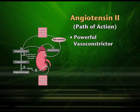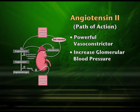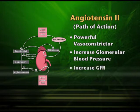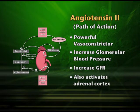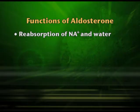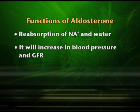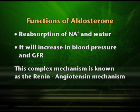Angiotensin 2 is a powerful vasoconstrictor — it constricts blood vessels, thereby increasing blood flow and blood pressure, so glomerular blood pressure and glomerular filtration rate (GFR) are increased. It also causes release of aldosterone from the adrenal cortex, which reabsorbs sodium and water, further increasing blood pressure and GFR. This is called the renin-angiotensin mechanism, which is important for regulation of kidney functioning when blood pressure is low.